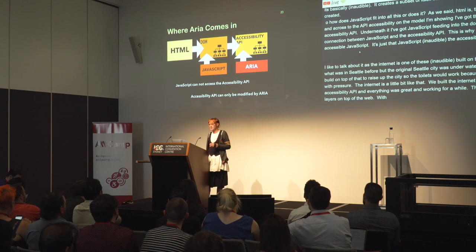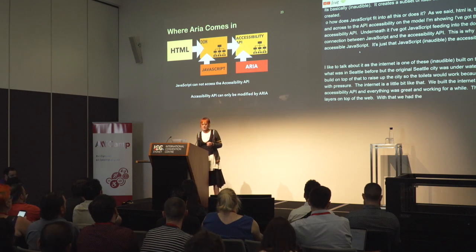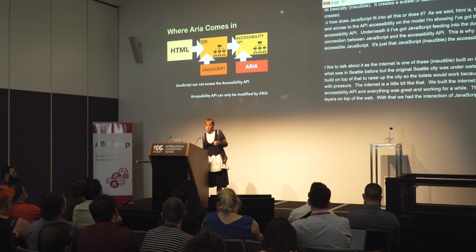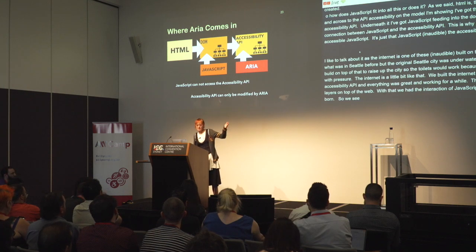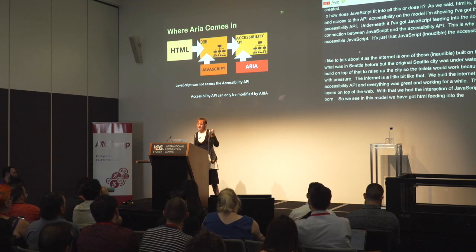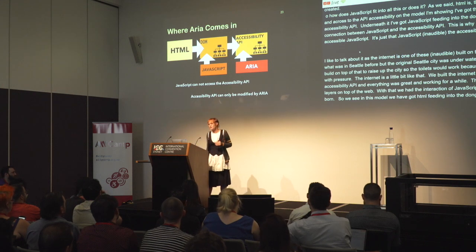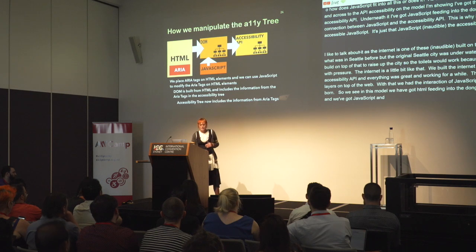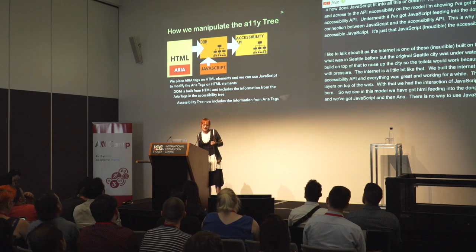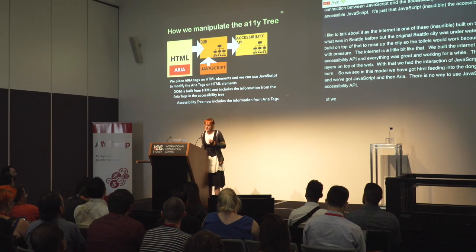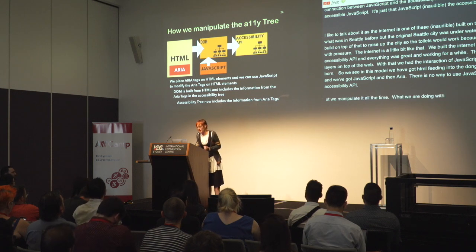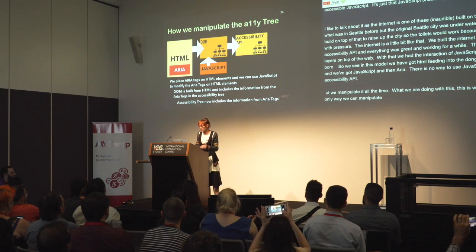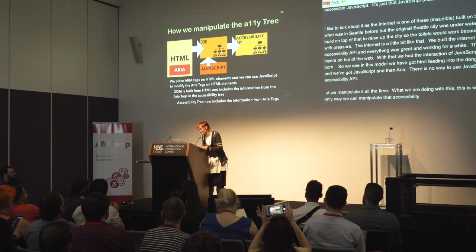ARIA talks directly to the accessibility API — it is the only thing that talks directly to the accessibility API. In the model: HTML feeds into the DOM, which feeds into the accessibility API. JavaScript feeds into the DOM, and ARIA feeds into the accessibility API. There is no way to use JavaScript to talk directly to that accessibility API. The only way we can manipulate it is by either using ARIA tags on our HTML, or injecting ARIA tags through JavaScript.